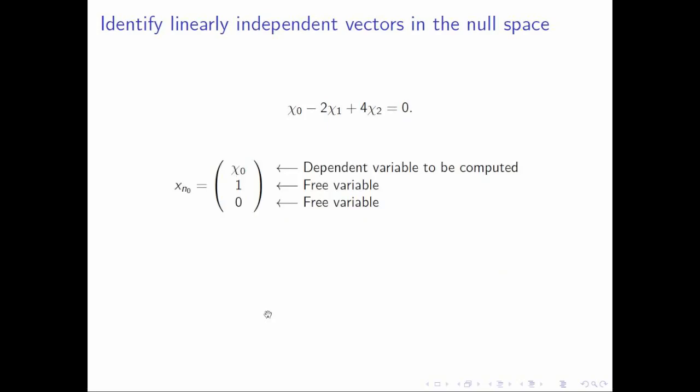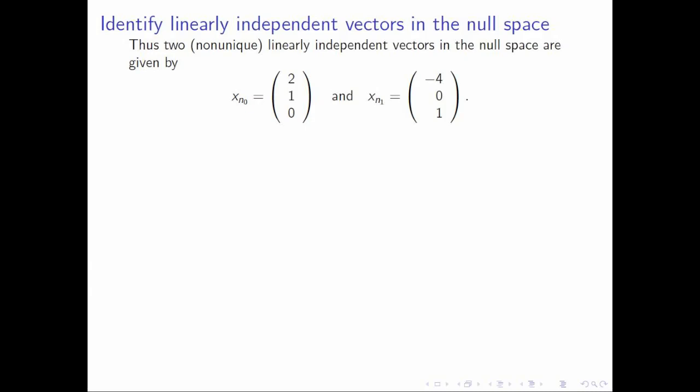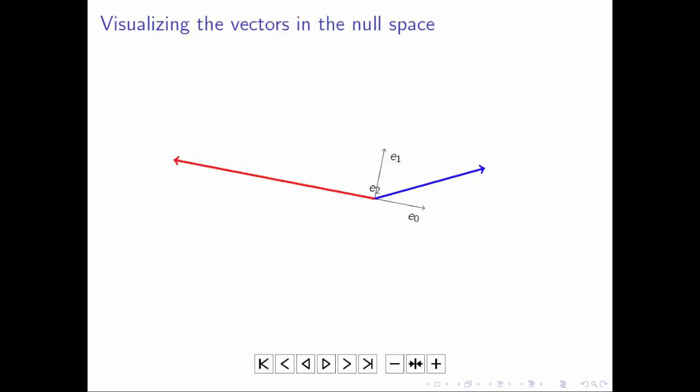And if we do that for the first one, then we get this solution right here, where if we substitute in 1 for chi 1, 0 for chi 2, then we can solve for chi 0. And then we can do the same thing. We can set the second free variable to 1. We can get this equation right here, solve for chi 0. And we end up with two vectors that we're going to later see are linearly independent. That's a term that you're going to learn about this week. For now, just think of these as two vectors that don't point in the same direction.